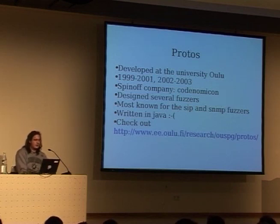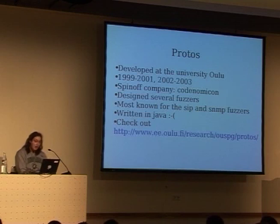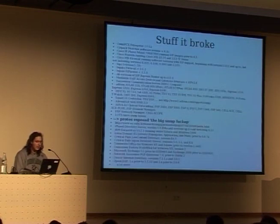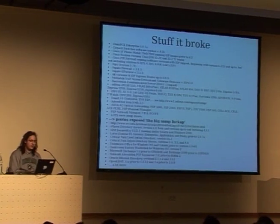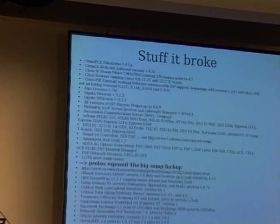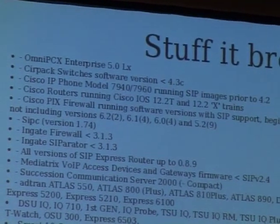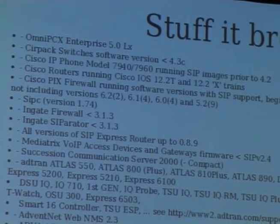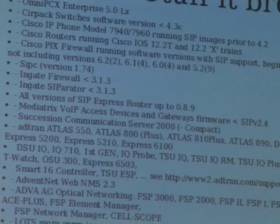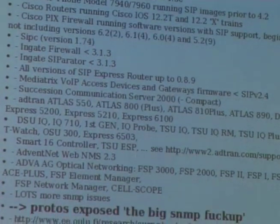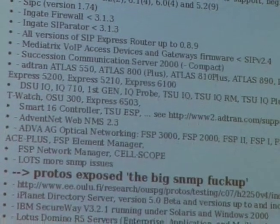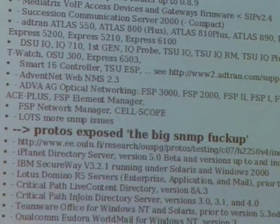One of their most known fuzzers are the SIP and SNMP fuzzers. Unfortunately the thing's written in Java. You should definitely check out their website — it's pretty awesome. These are just some of the stuff that Protoss broke; it's broken like a thousand different things. One notable case: in 2001 or 2002, they exposed what I call the big SNMP fuck-up, where basically everybody who implemented SNMP based their code on some old SNMP code, and they were all vulnerable to the same bug.